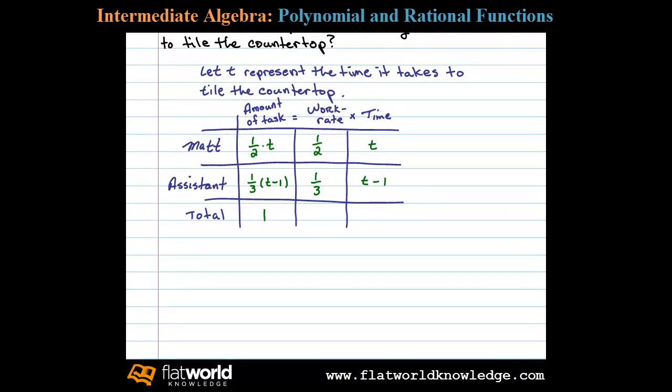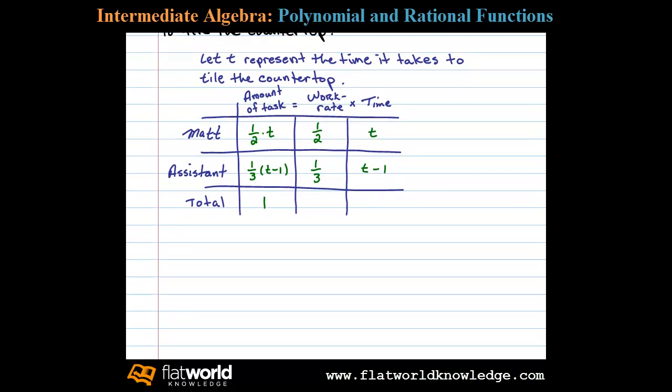Okay, so the setup is determined here by the first column. The amount of tasks completed by Matt plus the amount of the task completed by his assistant will be equal to one complete task. So to solve this equation I would begin by multiplying both sides by the LCD or 6.